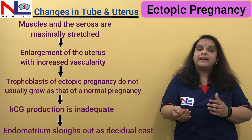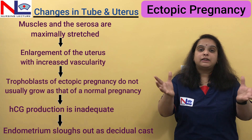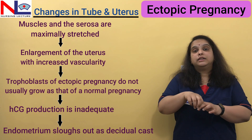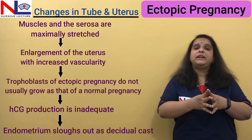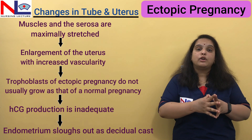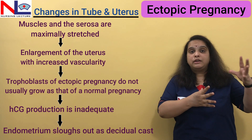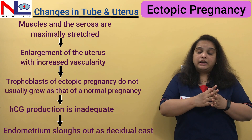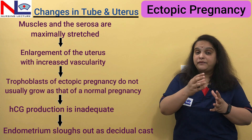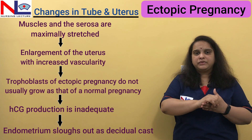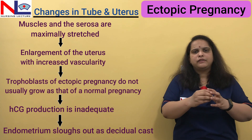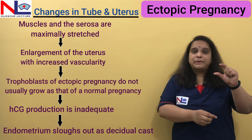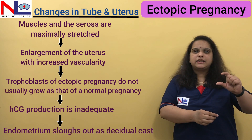Uterine bleeding can occur or decidual casting may happen, where the whole decidua comes out in a pouch-like structure, due to decreased progesterone as the trophoblast can no longer embed into the endometrial lining. Regarding the fate and outcome: if implantation is in the ampullary part, the pregnancy can continue for approximately eight weeks. If it is in the isthmus part, which is narrow, the pregnancy cannot continue past six weeks and starts interrupting.